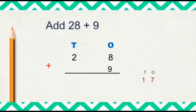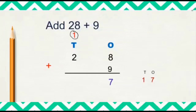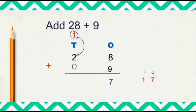And carry 1 to the 10s column. So we will write 7 here and carry 1 to the 10s column. As we carried 1 here, we should not forget to add the carried number. So 1 and 2 — 1 plus 2 is 3. If there is no number here, you can consider that place as 0. Any number added with 0, the answer will be the number itself. So 1 plus 2 will be 3. When we added 28 plus 9, we got the answer as 37.